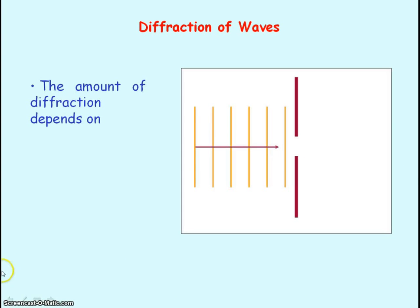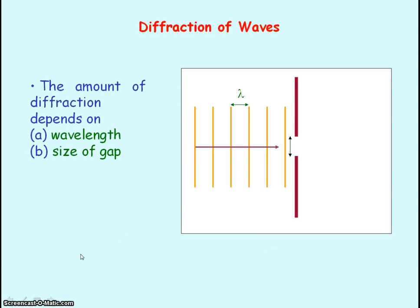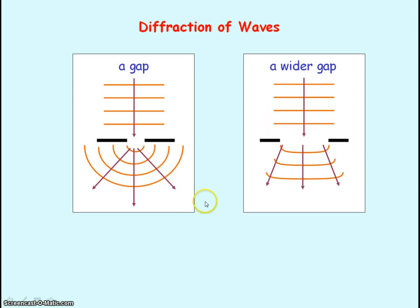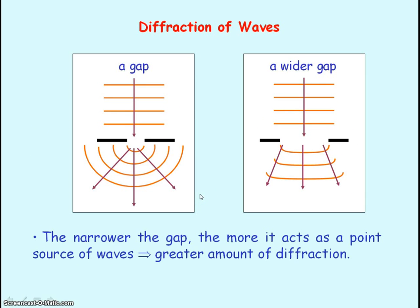The amount of diffraction — the spreading out of the wave — depends on the wavelength and also the size of the gap. You can see from these two diagrams that for a given wavelength, if the size of the gap is too large, you get less diffraction, less spreading out of the wave. The narrower the gap, the more the wave acts as a point source at the gap, and so there is a greater amount of diffraction.